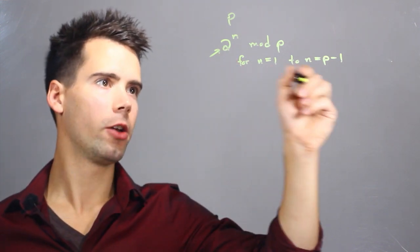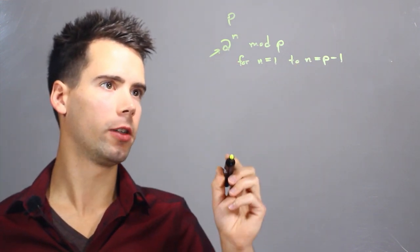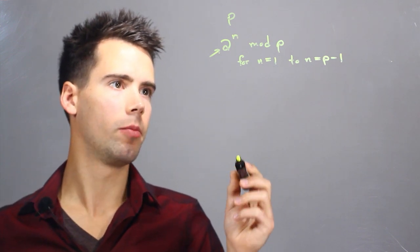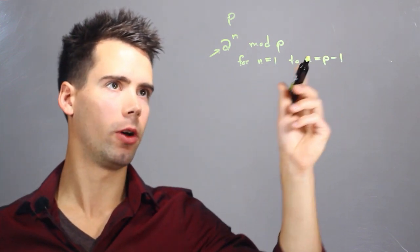Once we iterate through all these possible values we look to see if the outcome is unique and between 1 and p minus 1.